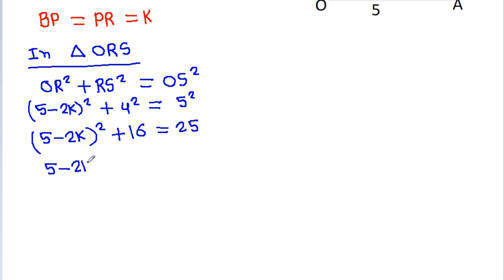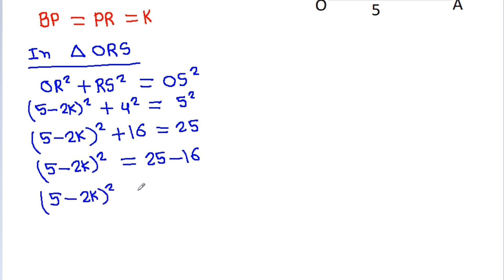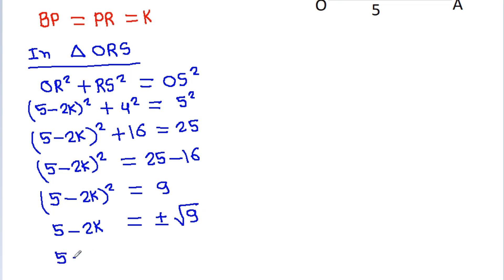So (5 minus 2K) squared will be equal to 25 minus 16, which is 9. Therefore 5 minus 2K is equal to plus or minus square root of 9, and the square root of 9 is 3.